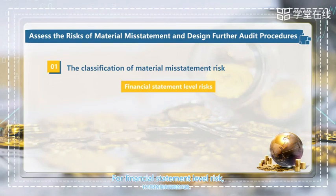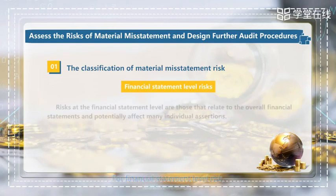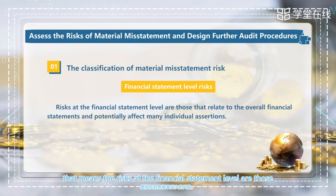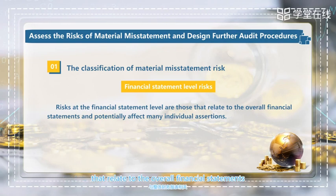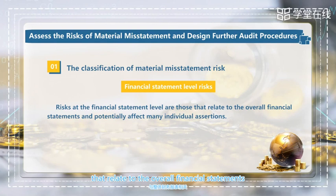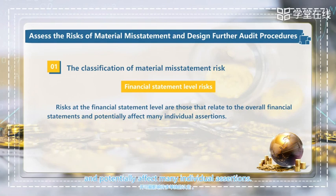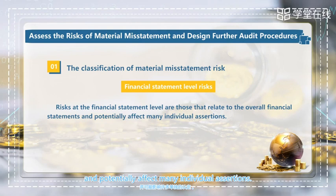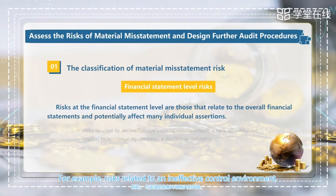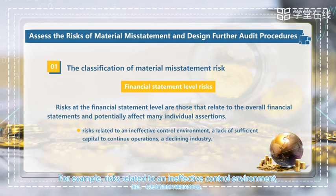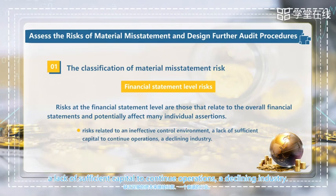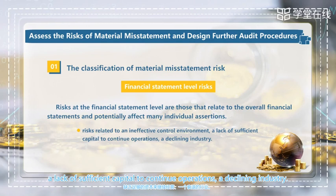For the financial statement level risk, the risks at the financial statement level are those that relate to the overall financial statements and potentially affect many individual assertions. For example, risks related to an ineffective control environment, a lack of sufficient capital to continue operations, or a declining industry.